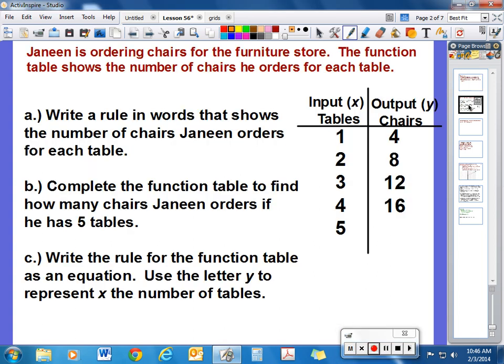So let's take a look at this first example. Janine is ordering chairs for the furniture store. The function table shows the number of chairs he orders for each table. And we have created this function table here. Notice we have an x value and a y value. x is the input, y is the output.